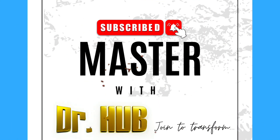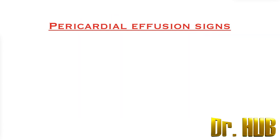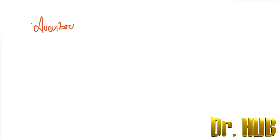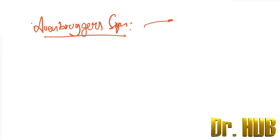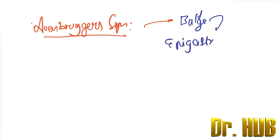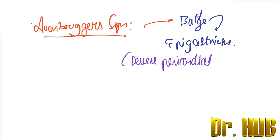Hey guys, this is Dr. Herb. In case you haven't subscribed, please do subscribe for updates. Pericardial effusion and you are looking at its signs. There is something known as the Ohnbrugger sign. The description is bulging of the epigastrium in severe pericardial effusion. The bulge in the epigastrium is present in severe pericardial effusion.